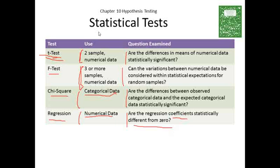So these are a lot of different statistical tests. As marketers, we use them all. Notice that each statistical test addresses a particular kind of data. T-test, two-sample numerical. F-test, three-sample numerical. Chi-square for categorical, and regression for pure numerical, where you're looking at one numerical variable versus another numerical variable.